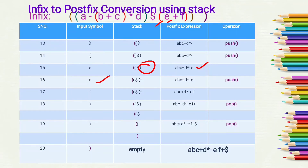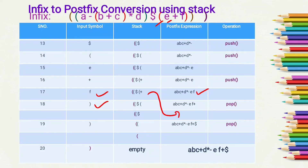Next is plus. We compare open bracket and plus operator precedence. As all operators have higher precedence than open bracket, we push plus into the stack. Next is 'F', which is an operand, so we add it into the postfix expression. Next is a closing bracket, so we pop all operators until we get the open bracket — plus is popped and added into the postfix expression, and the open bracket is cancelled by this closing bracket.